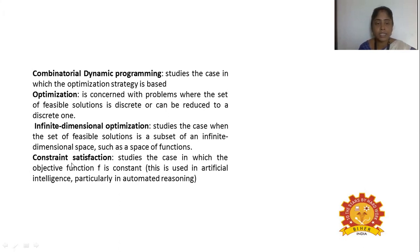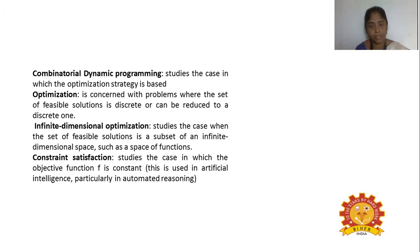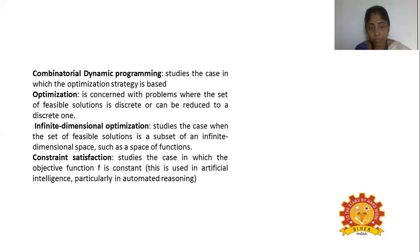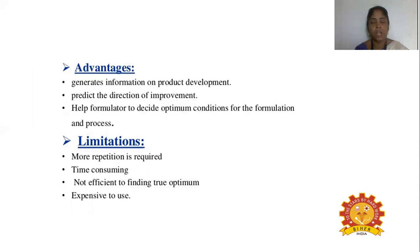Constraint satisfaction is the case in which the objective function is said to be constant, which can be used in AI — in various automated reasoning techniques. There will be restrictions on using dynamic programming for a particular satisfaction, and this type is used in the case of artificial intelligence.